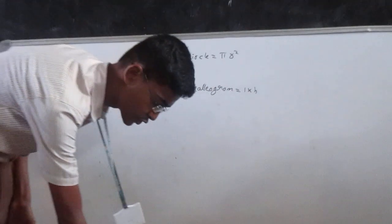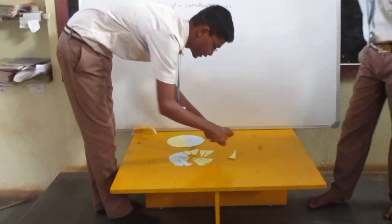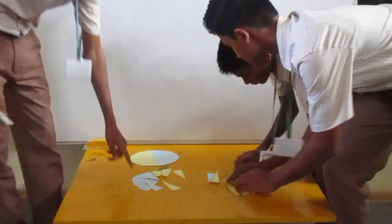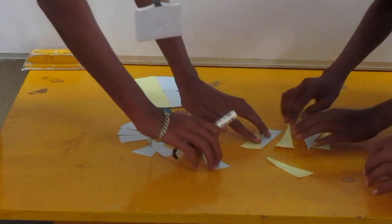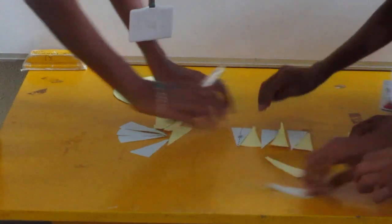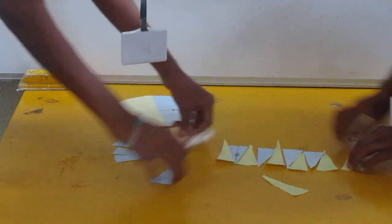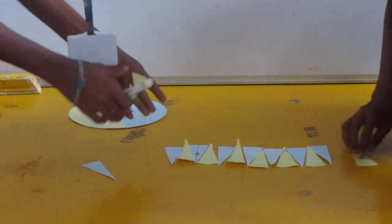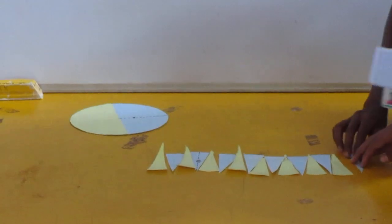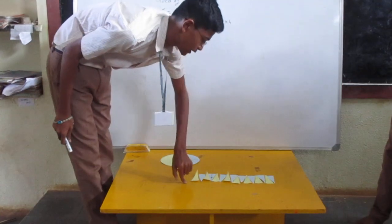Can you join these cut pieces of a circle into a parallelogram? From this end to this end, L indicates the length of the parallelogram formed from the circle.